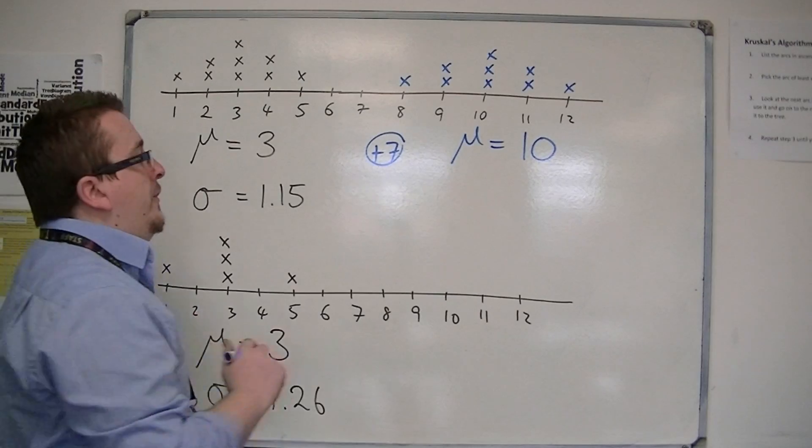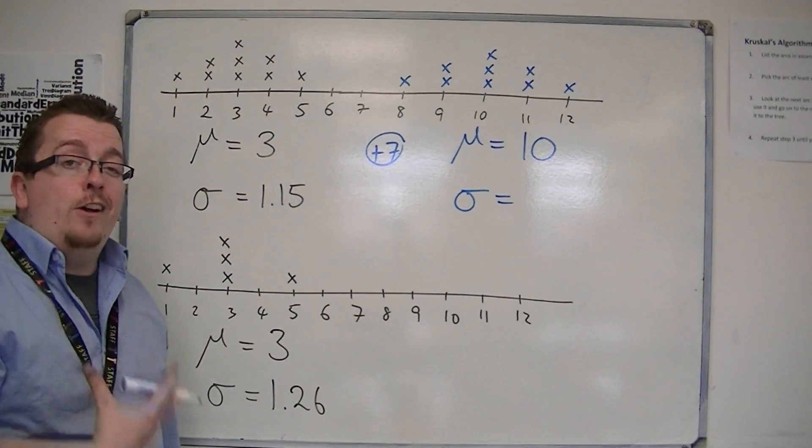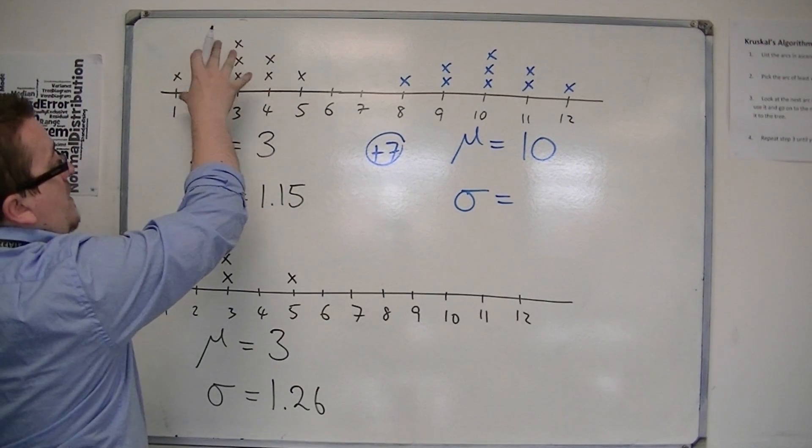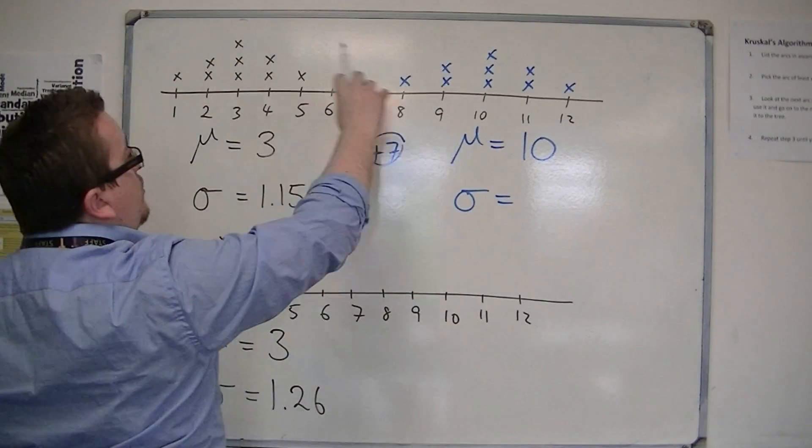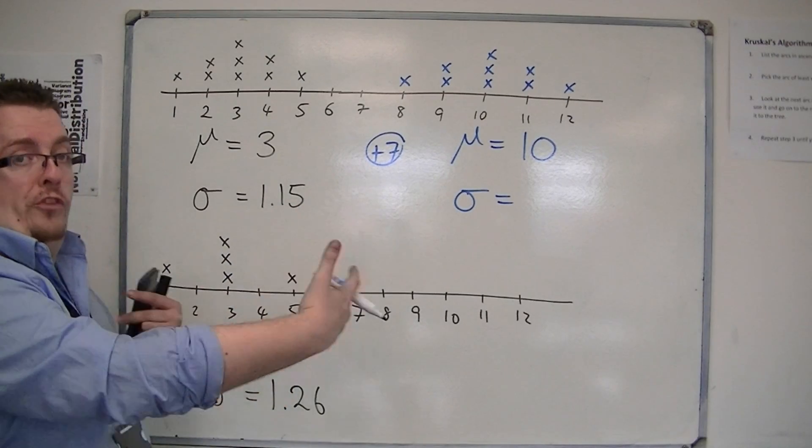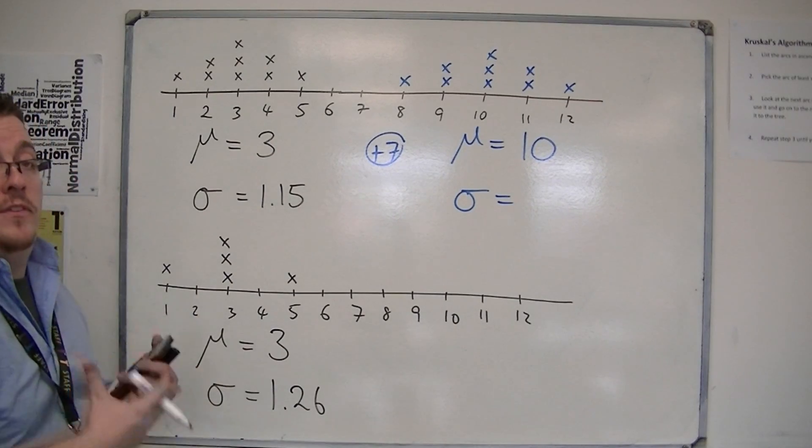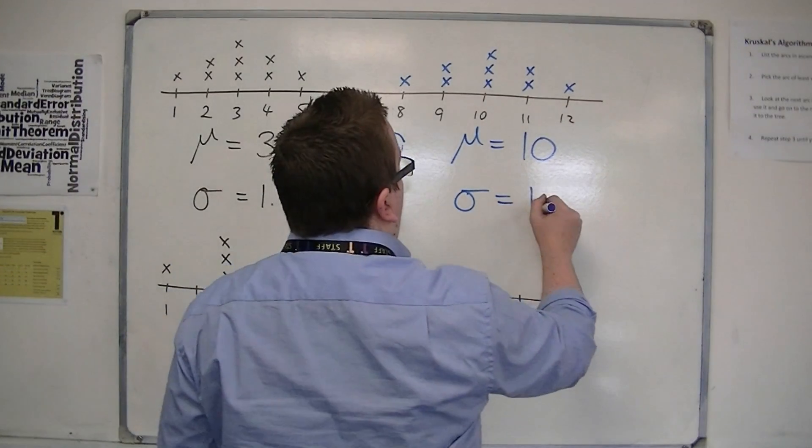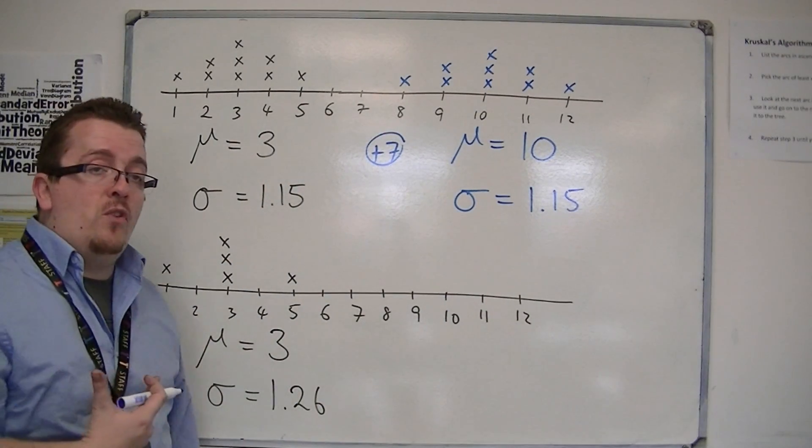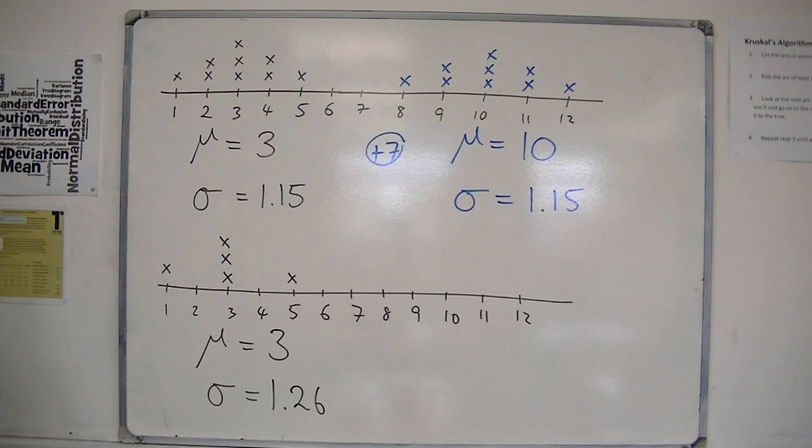Now, how about the standard deviation? Now the standard deviation tells you how spread out the data is. But you can see that if I've just added a number to my original set, my original data, in no way have they become more spread out, or less spread out. So actually what's happened is that the standard deviation hasn't changed. And so the standard deviation will be unaffected by just adding or subtracting a certain number from the original data.